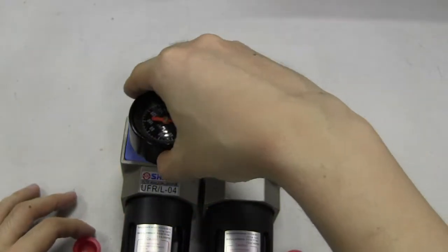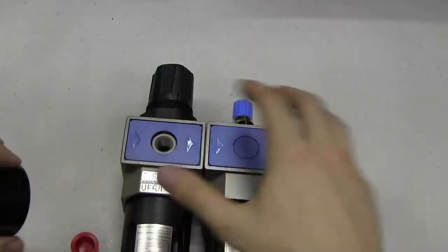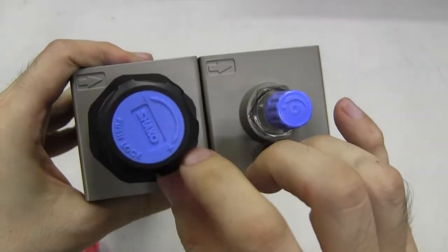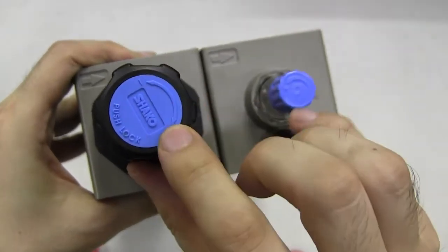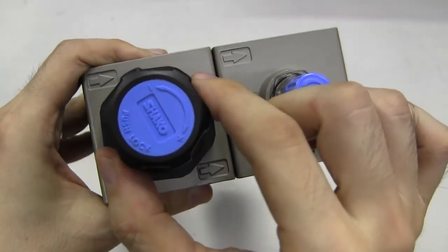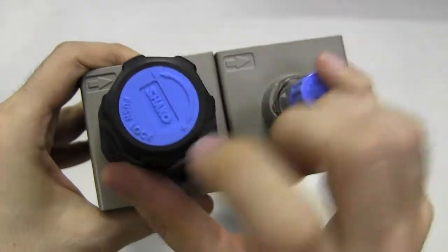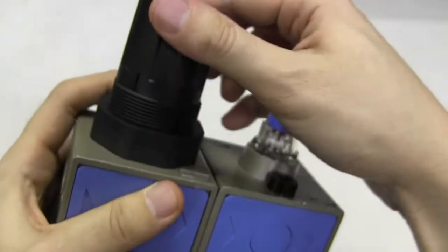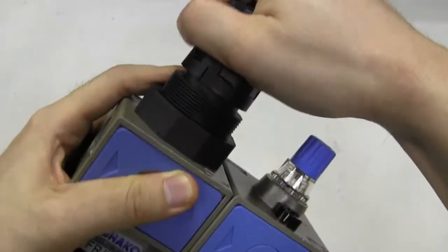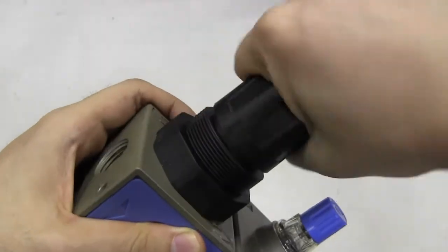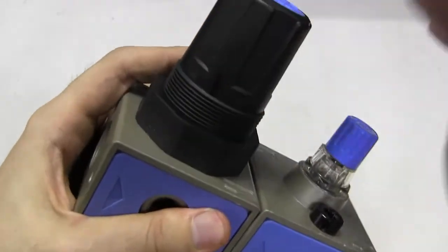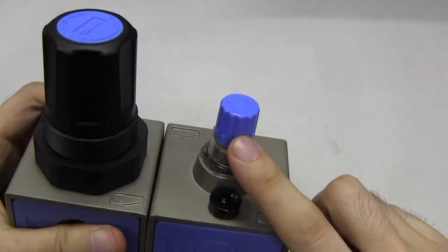For the regulator part, you see here if you turn it clockwise the pressure will go up, and counterclockwise it's going to decrease the pressure. It's a push lock type, meaning there's a lock. If you're going to change the pressure, first pull it up like this, then set the pressure that you want, then push it back.